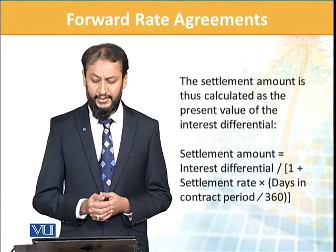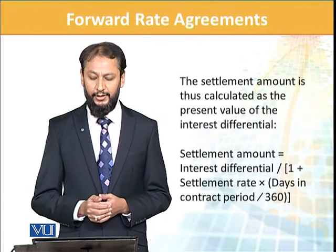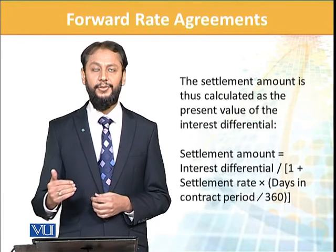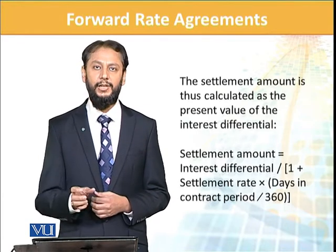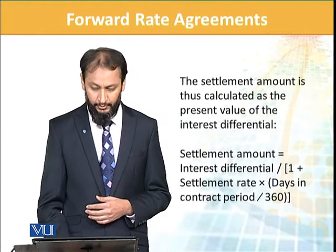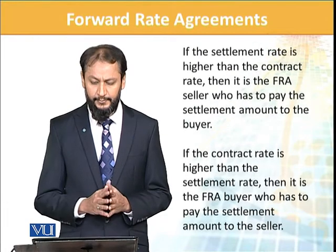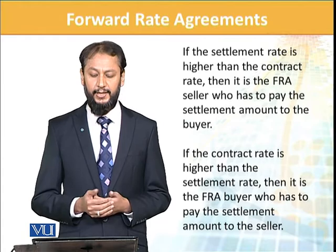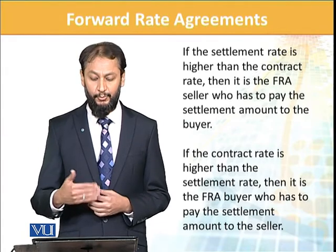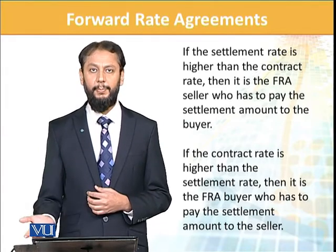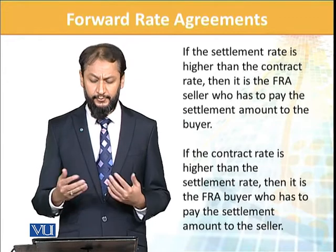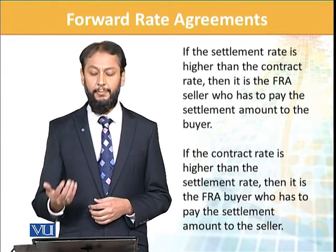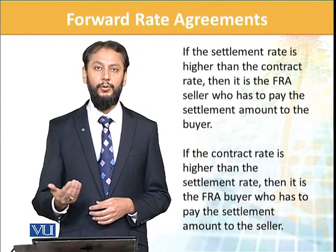Settlement = Interest rate differential ÷ (1 + settlement rate × days in contract ÷ 360) — یعنی کہ آپ اس کی present value نکال لیں گے، وہ آپ کی settlement ہوگی۔ If the settlement rate is higher than the contract rate, then it is the seller who has to pay — اگر rates بڑھ گئے ہیں تو جو آپ کا buyer ہے اس کو advantage ہو جائے گا۔